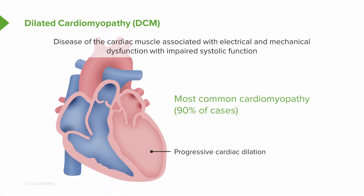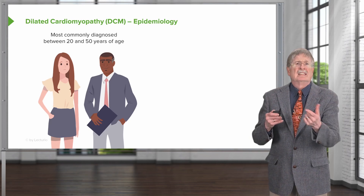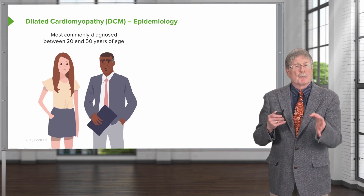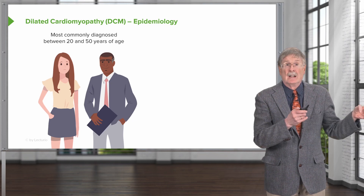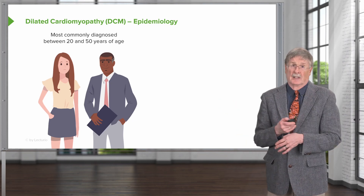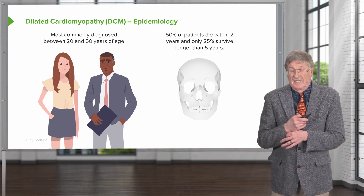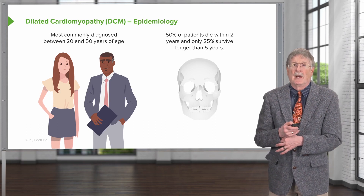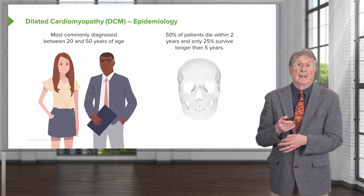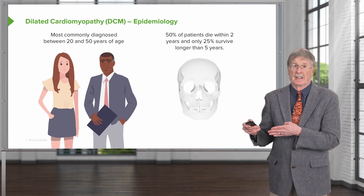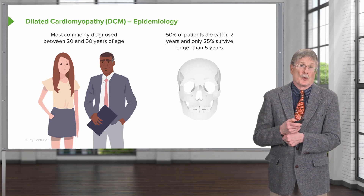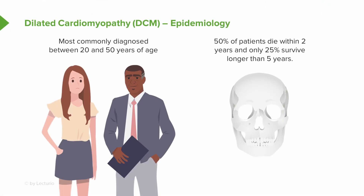Dilated cardiomyopathy is the most common cardiomyopathy, causing about 90% of cases not otherwise specified. It is most commonly diagnosed in the 20s to 50s, though it can occur much younger or later. It is a lethal disease: 50% of patients will be dead within a couple of years if not successfully treated, and only 25% will survive longer than five years — making it as bad as or worse than many malignancies.